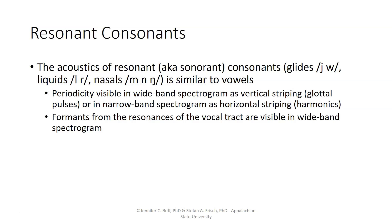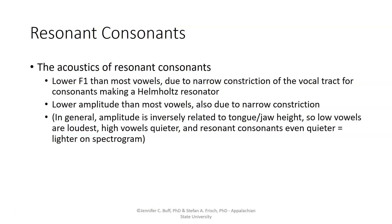The acoustics of the resonant consonants, also known as sonorant consonants, such as the glides, liquids, and nasals, is similar to the acoustics of vowels. There should be periodicity visible in the wideband spectrogram as vertical striping representing the glottal pulses, or in a narrowband spectrogram as horizontal striping representing the harmonics. There will be formants from the resonances of the vocal tract visible in a wideband spectrogram as a dark horizontal band. In the case of resonant consonants, the first formant is lower than it is for most vowels, due to a narrow constriction of the vocal tract for consonants, making a Helmholtz resonator shape.